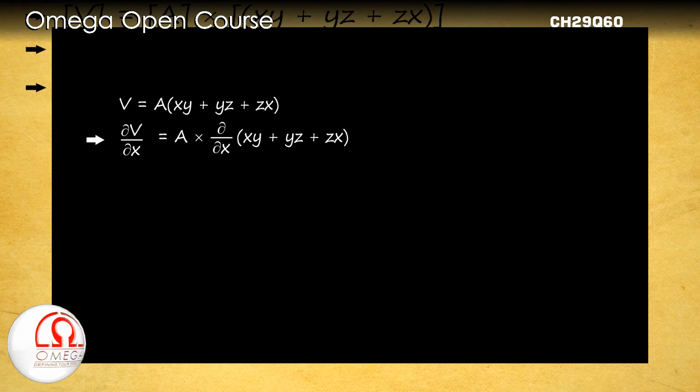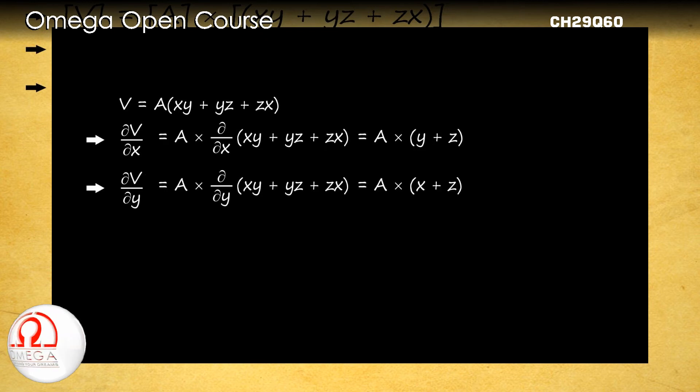If y is constant, the differentiation of xy with respect to x is y. The second term yz is constant and hence its differentiation is zero. The differentiation of zx is z. Thus the partial derivative of V with respect to x is A(y plus z). Similarly, the partial derivative of V with respect to y is A(x plus z), and with respect to z is A(y plus x).